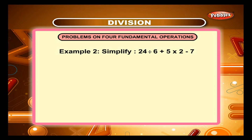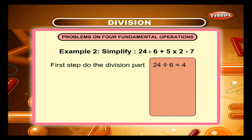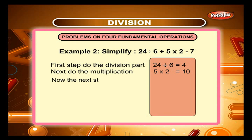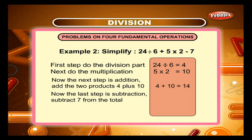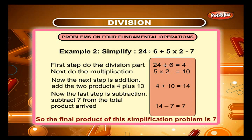Example 2 — Simplify: 24 divided by 6 plus 5 multiplied by 2 minus 7. Solution: First, do the division: 24 divided by 6 is equal to 4. Next, do the multiplication: 5 times 2 is equal to 10. Now, do the addition: 4 plus 10 is equal to 14. Finally, do the subtraction: 14 minus 7 is equal to 7. So the final answer of this simplification problem is 7.